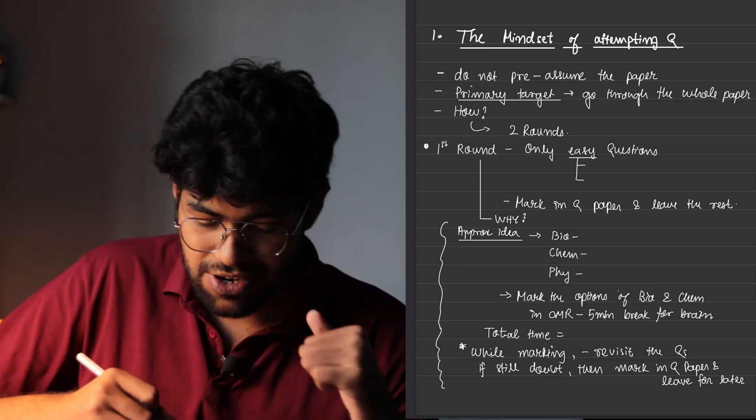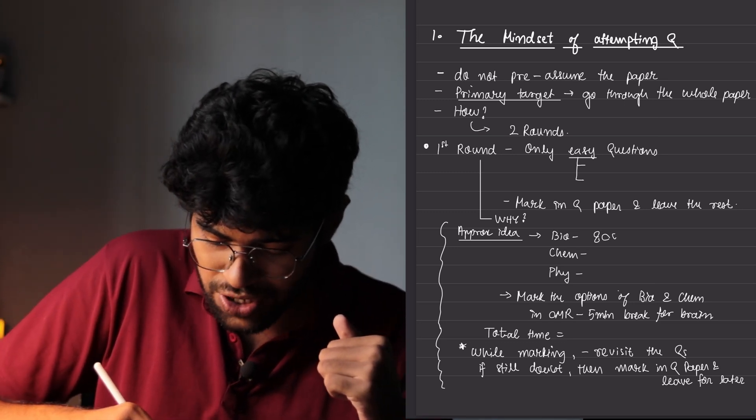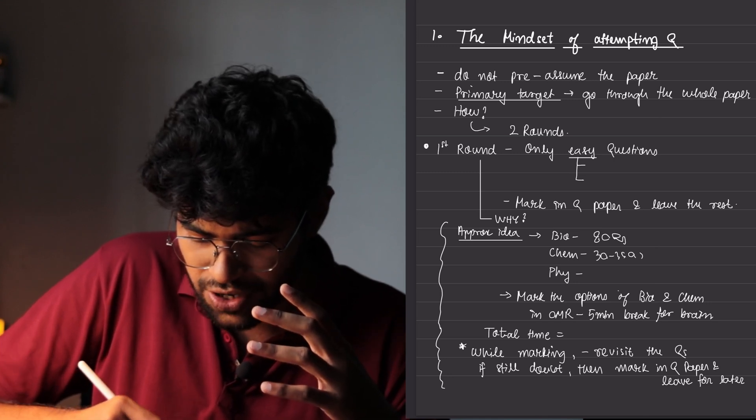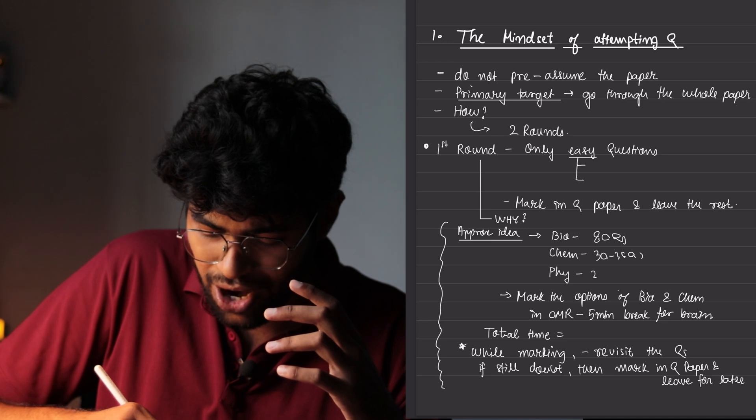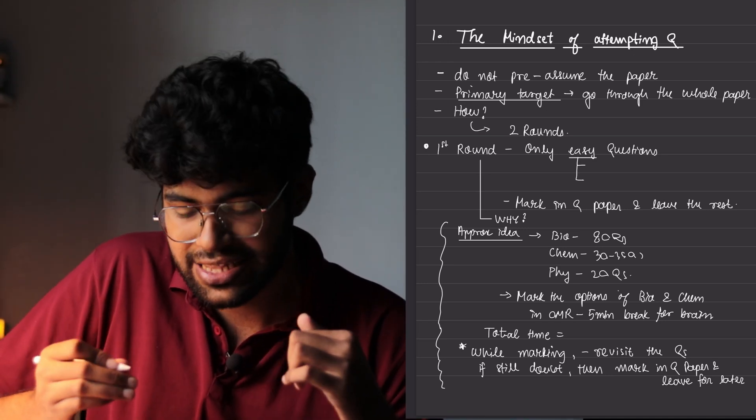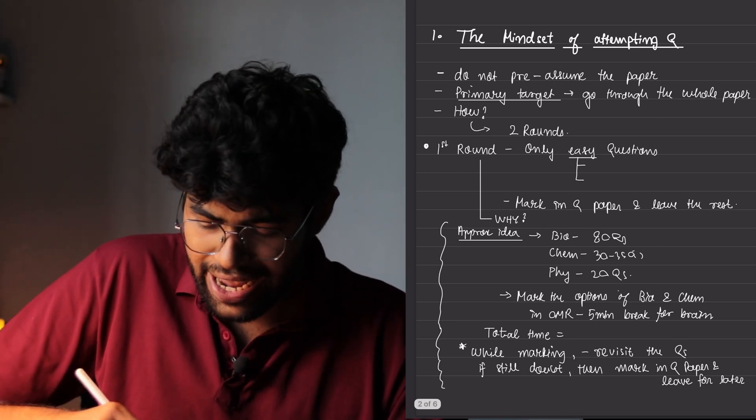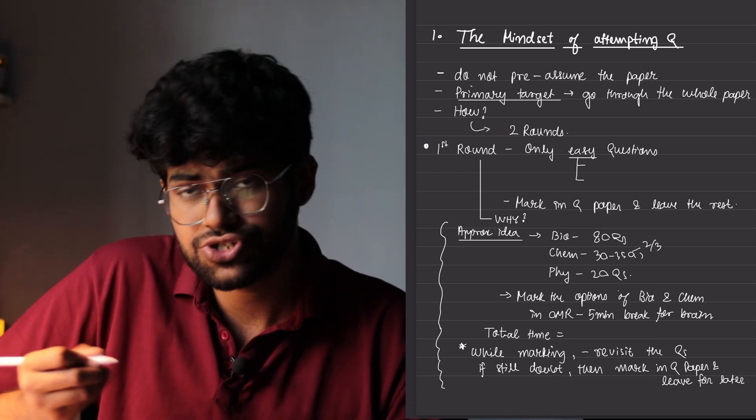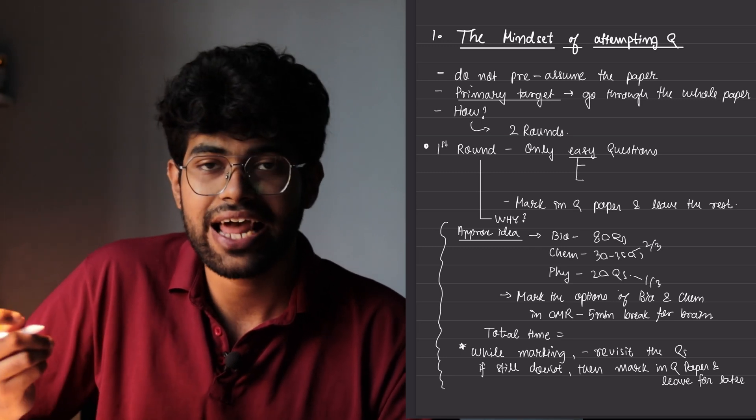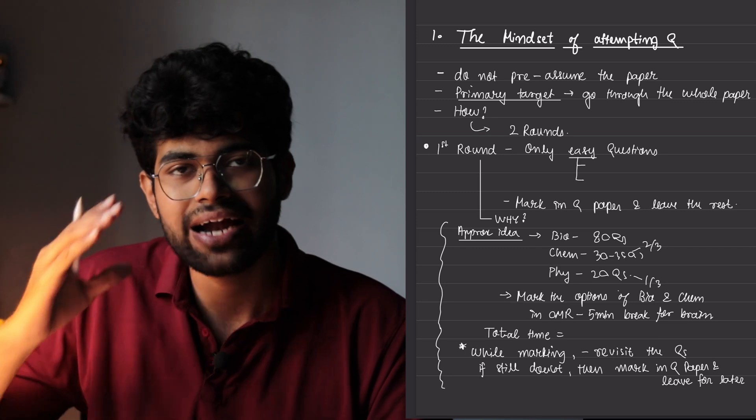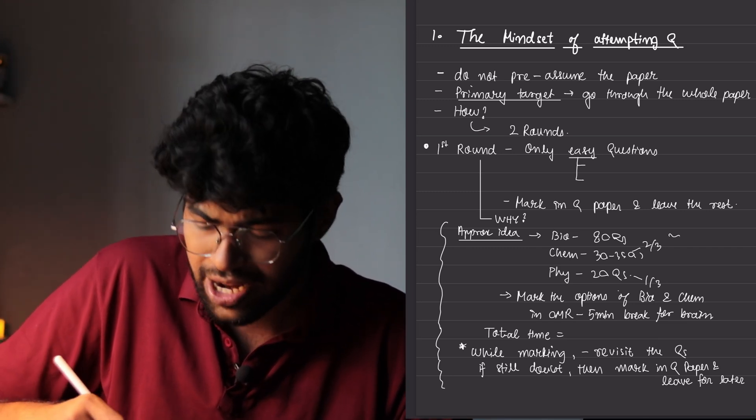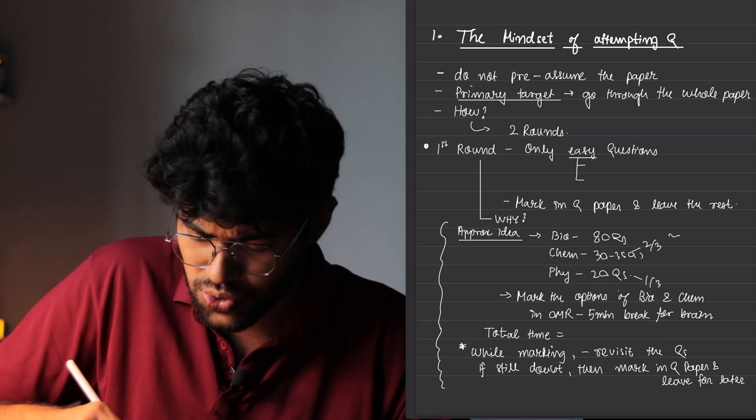By doing this, you will be able to do almost 80 questions of biology, almost 30 to 35 questions of chemistry and around 20 questions of physics because this amount of questions will come easy in the exams. So basically you have to do around two out of three questions in chemistry and one out of three questions in physics. That will decrease your anxiety drastically because you are already in the mindset that you have to do that.